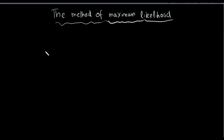I am going to talk about the method of Maximum Likelihood. We also have to talk about the method of moments. We can use the method of Maximum Likelihood as a point estimate. We will copy the point estimate and then we will write the likelihood function.